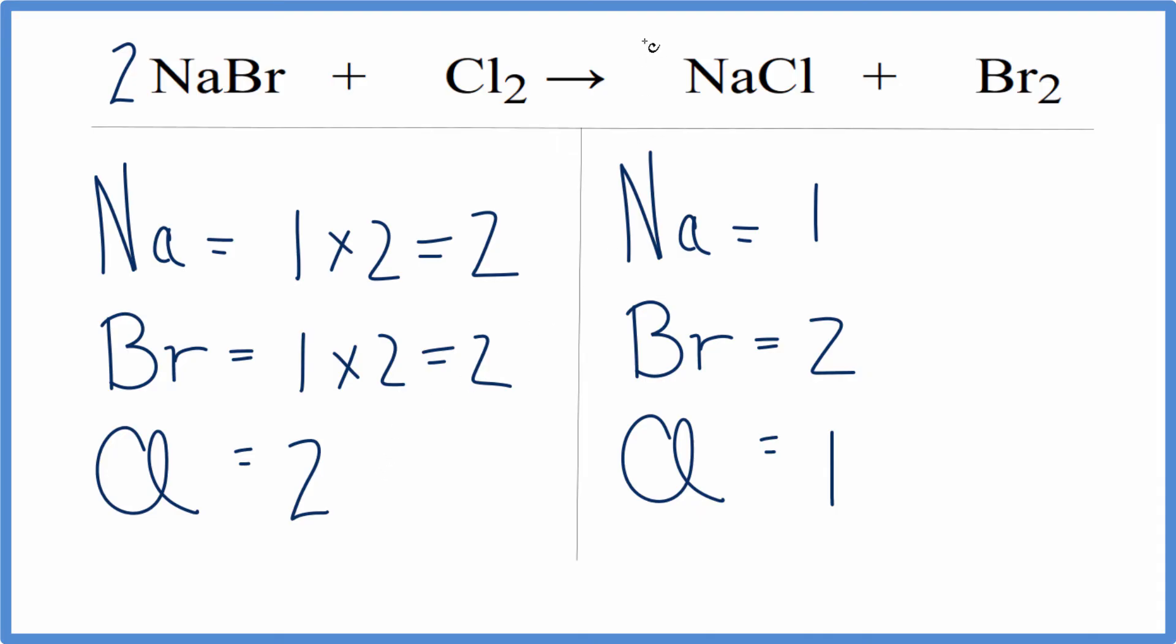If we put a coefficient of two in front of the NaCl for the chlorines, one times two, that would give us two chlorines, and those would be balanced. And the sodium, one times two, that would give us two sodium atoms, and that would be balanced.